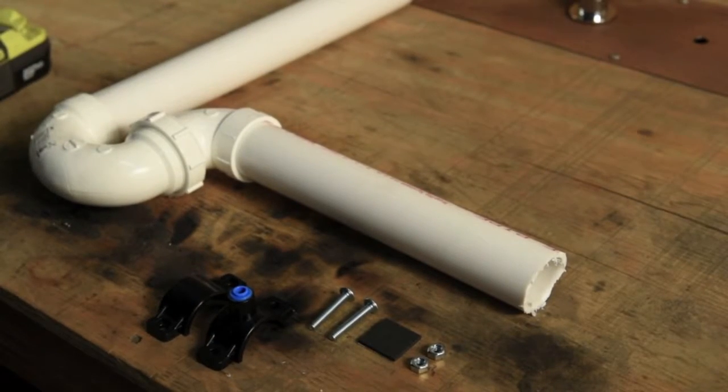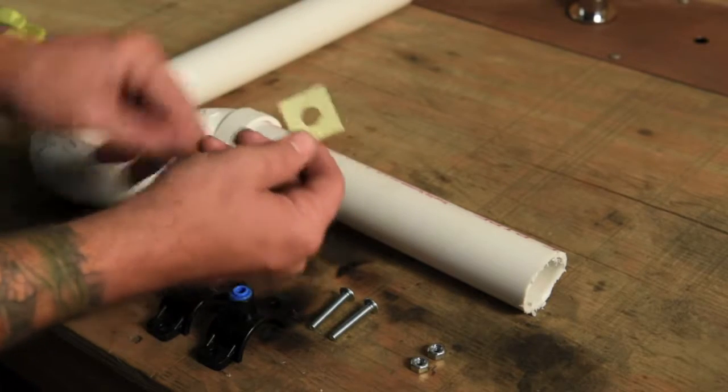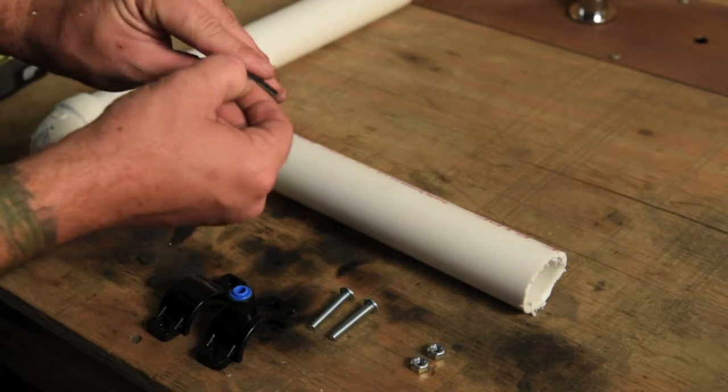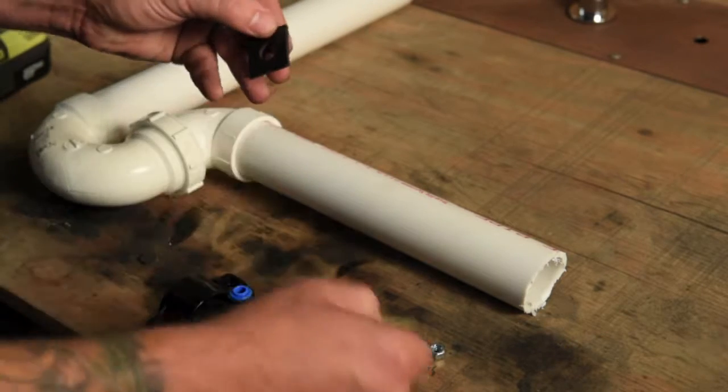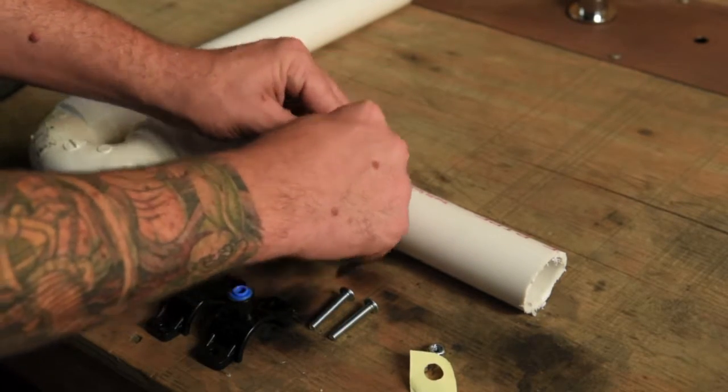Once your faucet and your tie-in is complete, you then need to attach the drain to the P-trap underneath the sink. Remove the paper from the adhesive cutout and place on the section of pipe where you wish your line to connect.